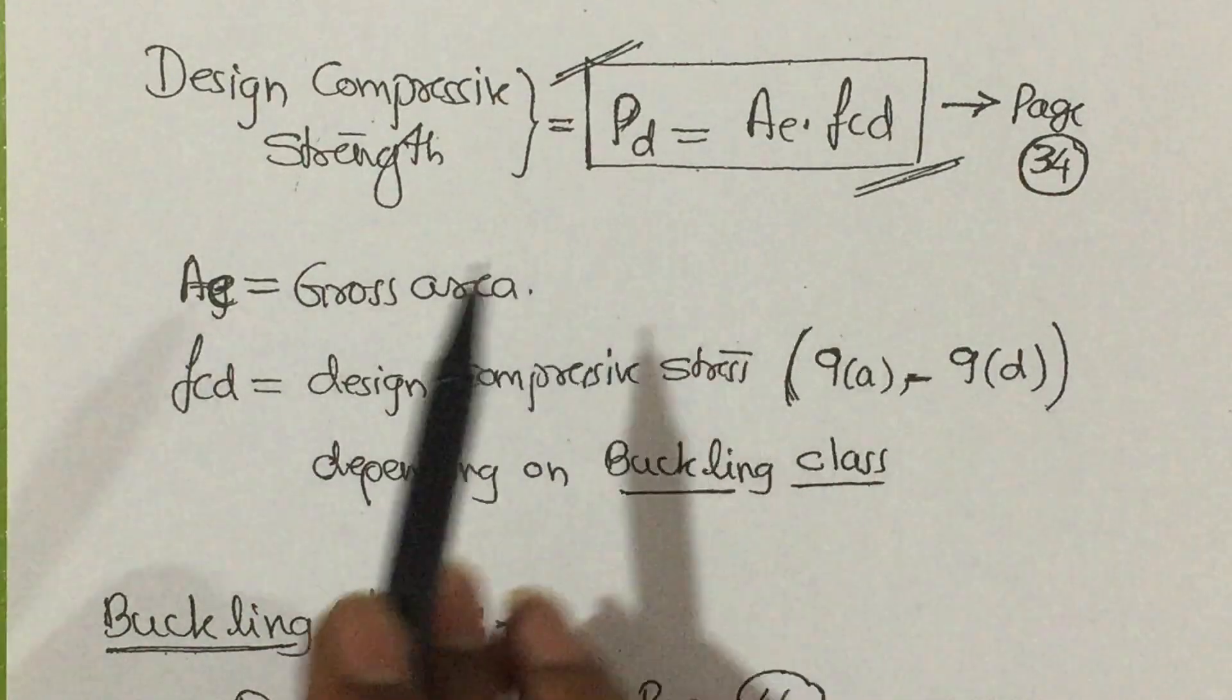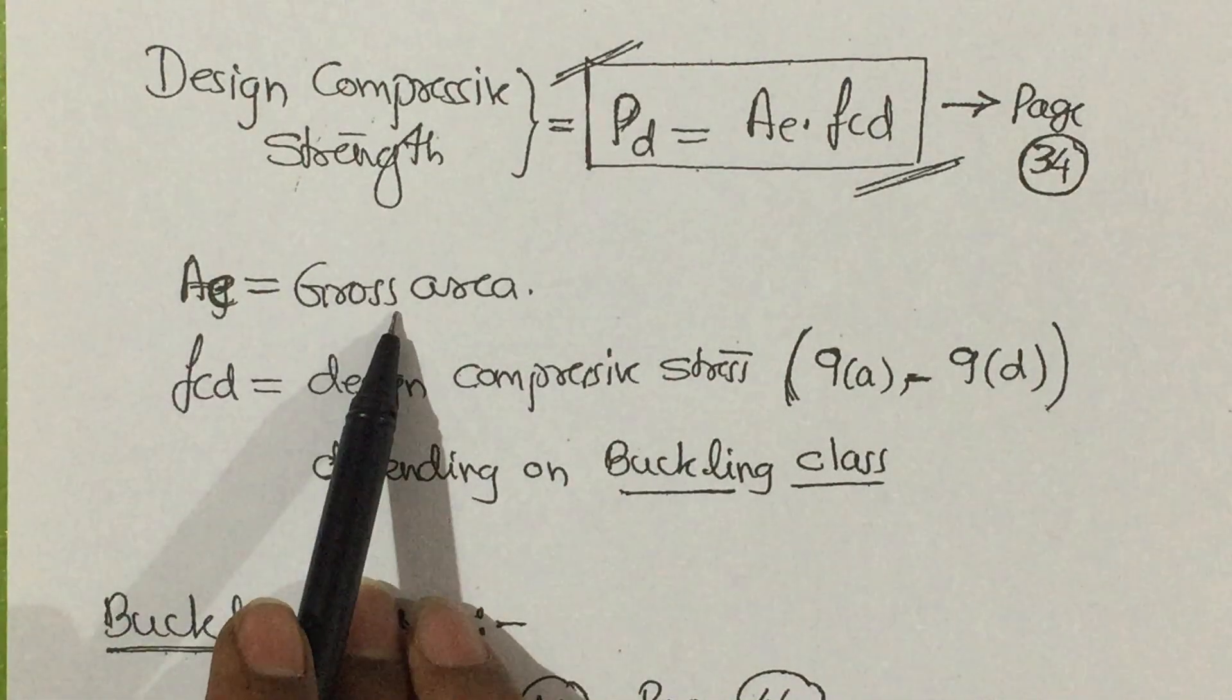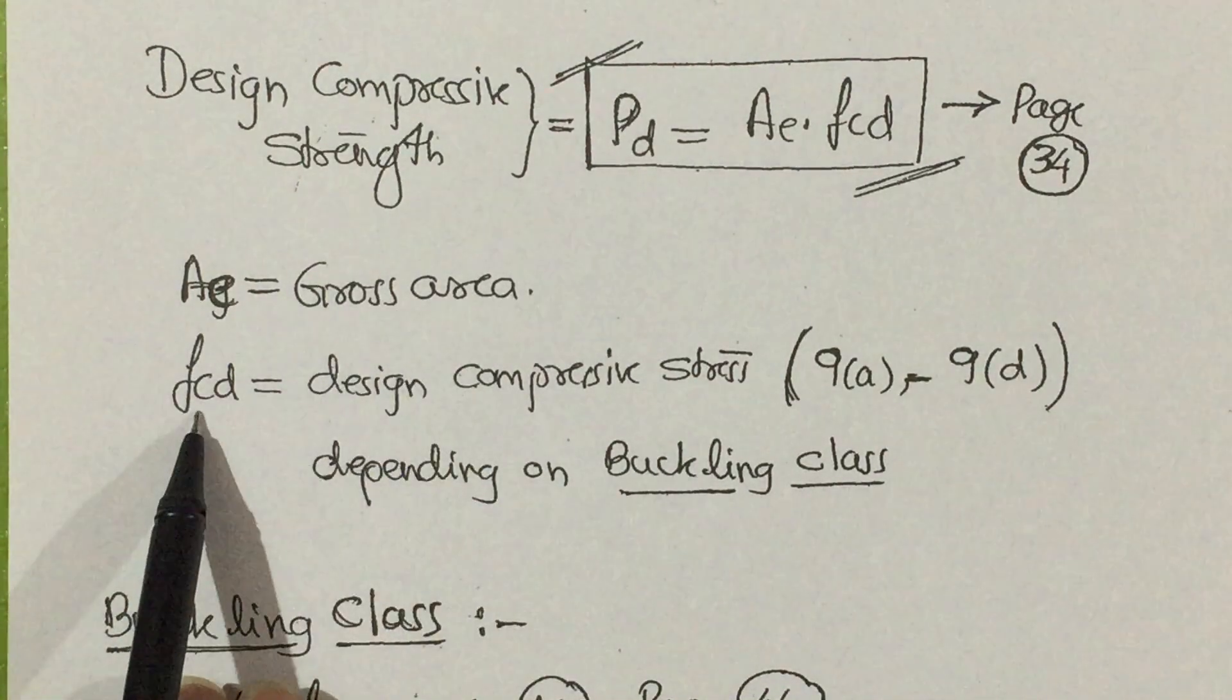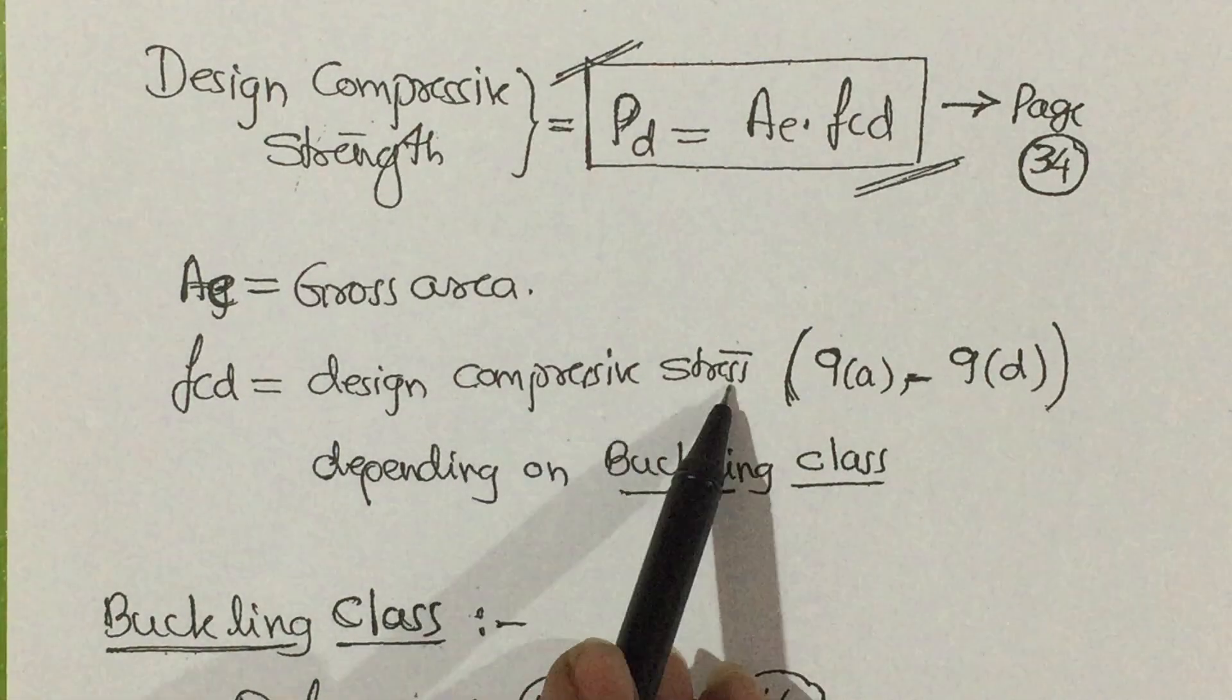ae is nothing but gross area or the total area. fcd is design compressive stress.